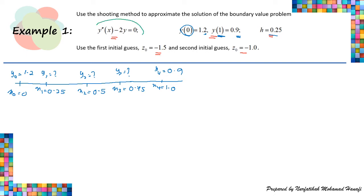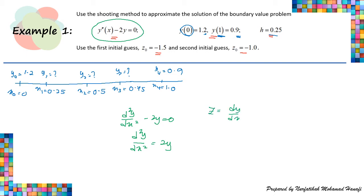Next, let's transform our second order ODE into a system of first order ODEs. The equation is d²y/dx² - 2Y = 0. Rearranging: d²y/dx² = 2Y. We let Z = dY/dX, so this is F1. Differentiating: dZ/dX = d²y/dx² = 2Y. So dZ/dX = 2Y, which is F2. Our system of first order ODEs is: dY/dX = Z (F1) and dZ/dX = 2Y (F2). We will solve these two equations using Euler's method.